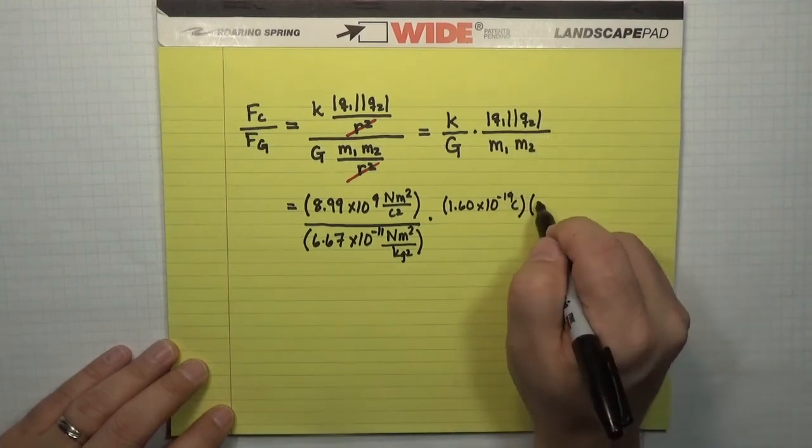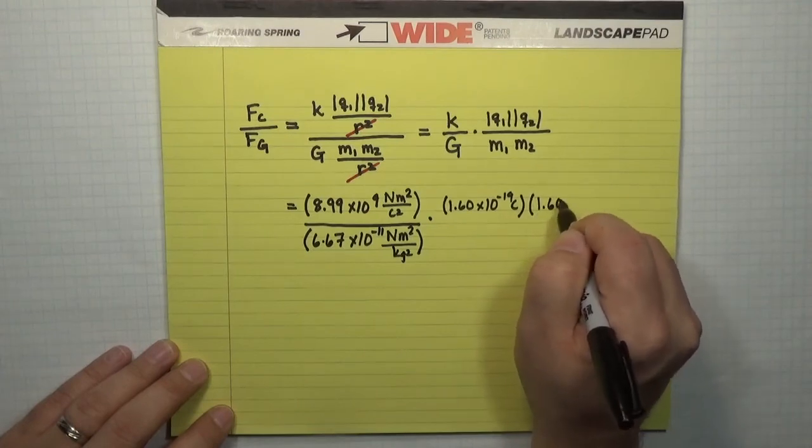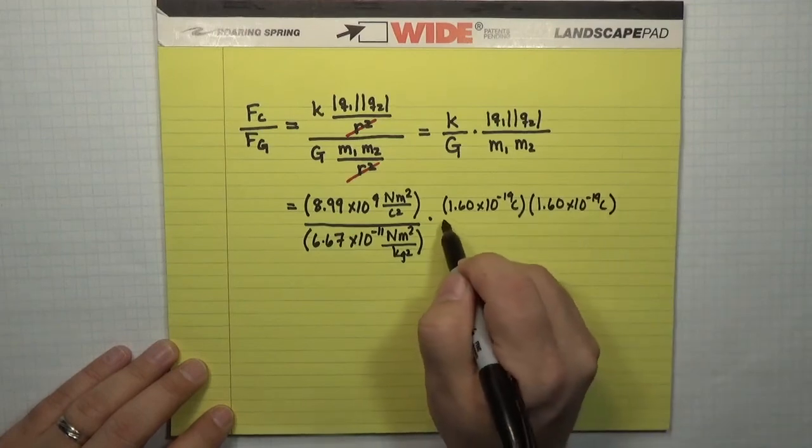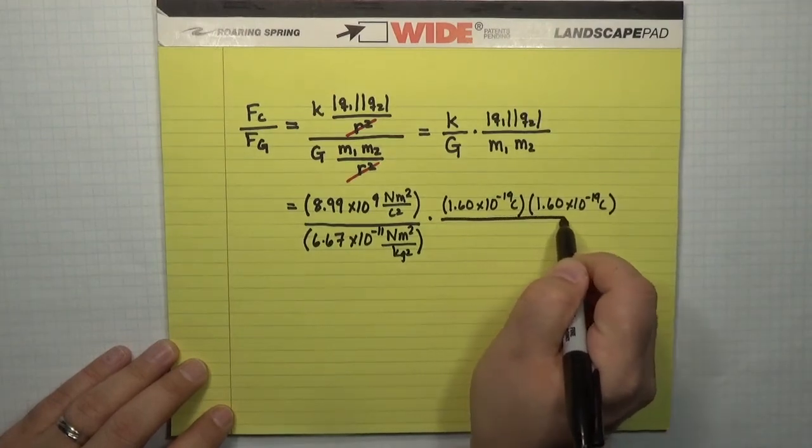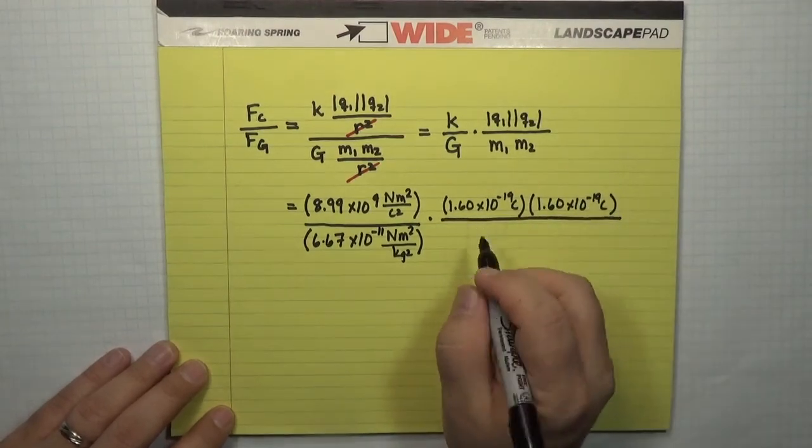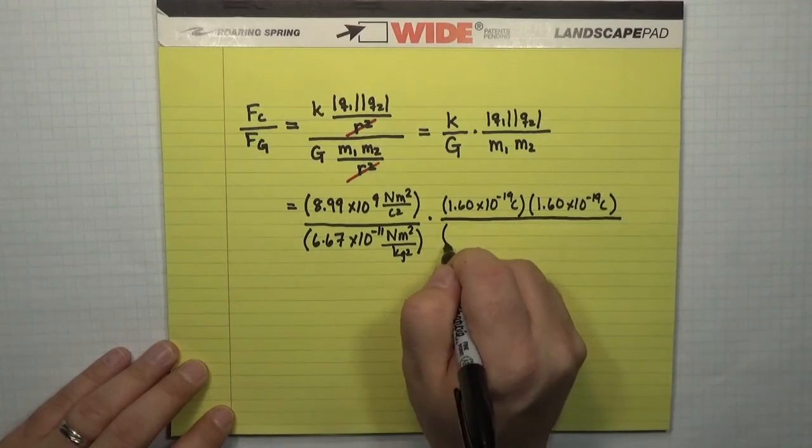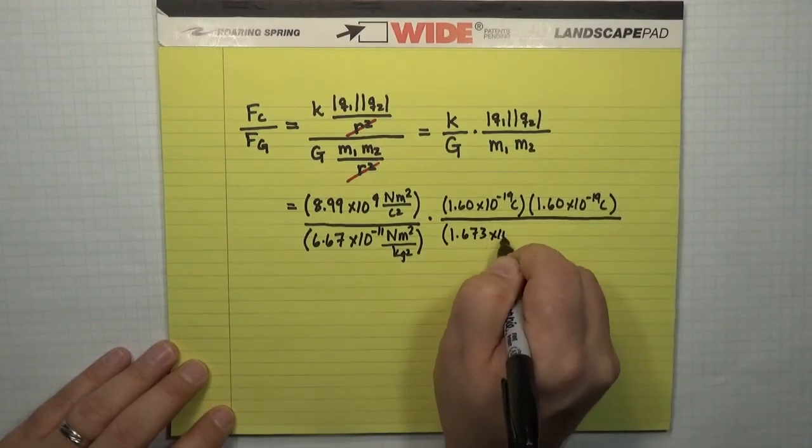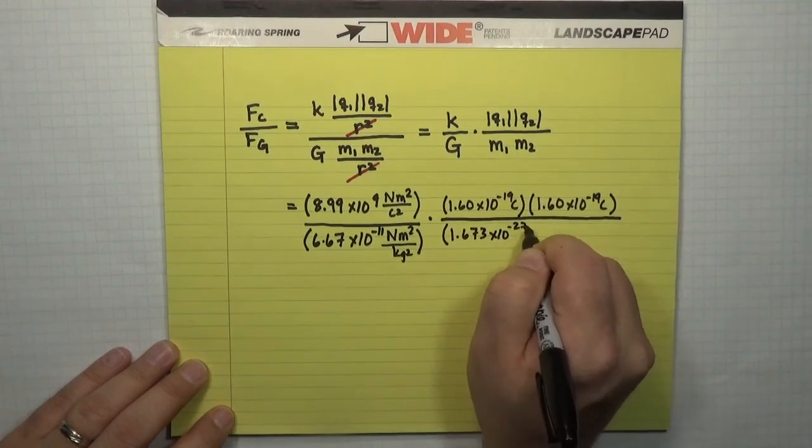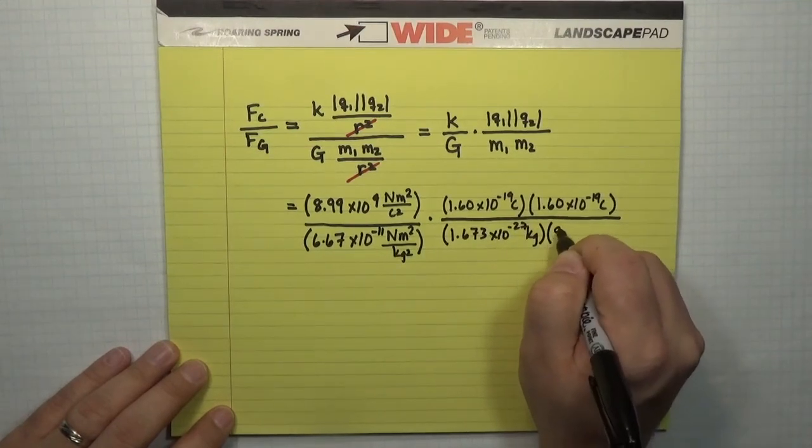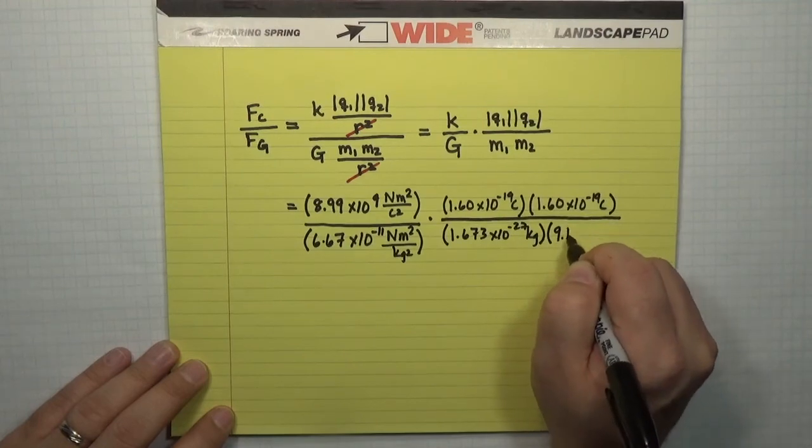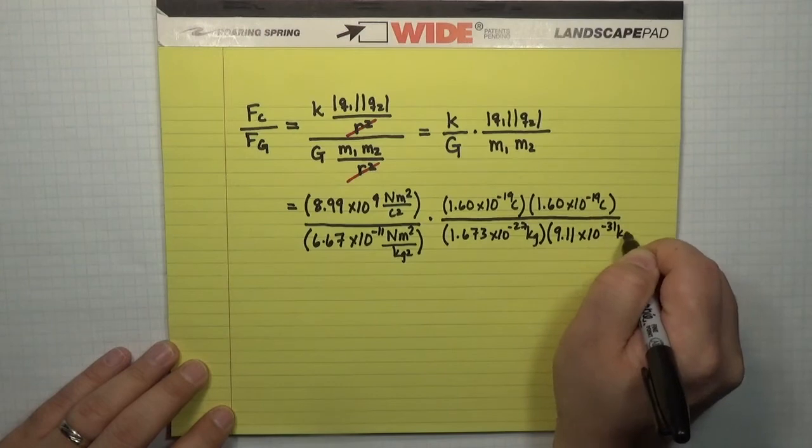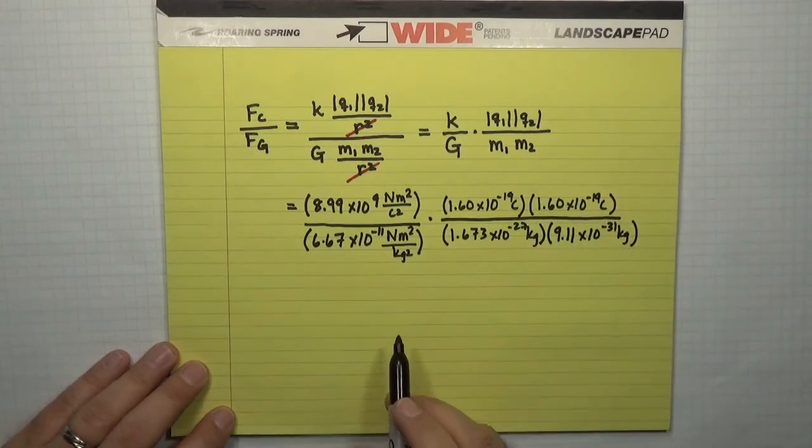So, if I was actually writing down the charge of the electron, I'd have a minus sign, but the absolute value gets rid of it. So, this is 1.60 times 10 to the minus 19 Coulombs for the electron without the minus sign because of the absolute value. And then the two masses, which you can look up, the mass of the proton is 1.673 times 10 to the minus 27 kilograms. The mass of the electron is considerably smaller, 9.11 times 10 to the minus 31 kilograms.